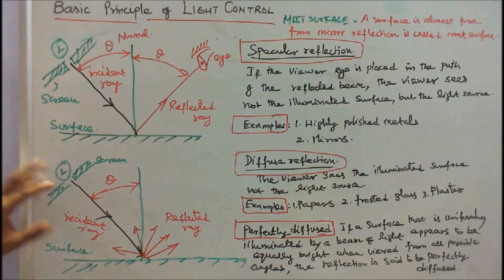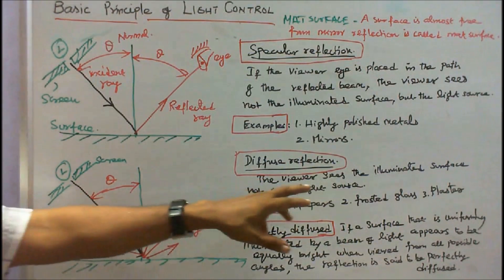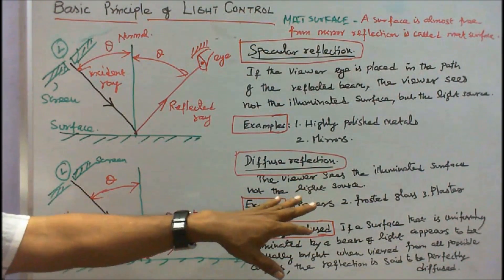This is a light source. This is a screen. Here the incident ray is scattered. The viewer sees the illuminated surface, not the light source.